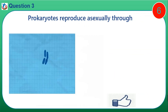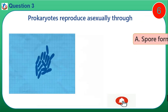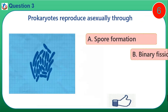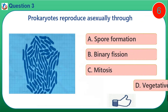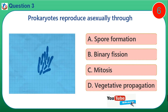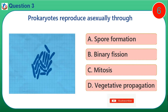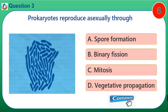Question 3. Prokaryotes reproduce asexually through: A. Spore formation. B. Binary fission. C. Mitosis. D. Vegetative propagation.